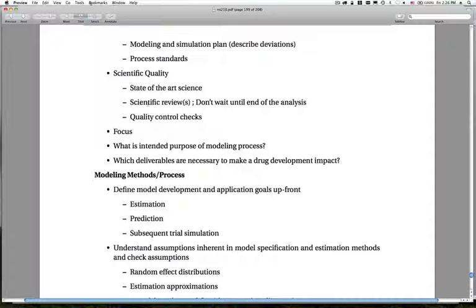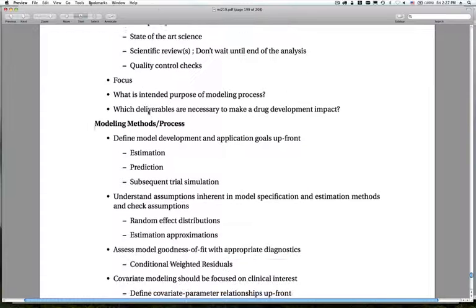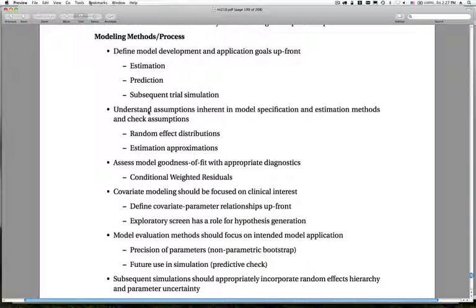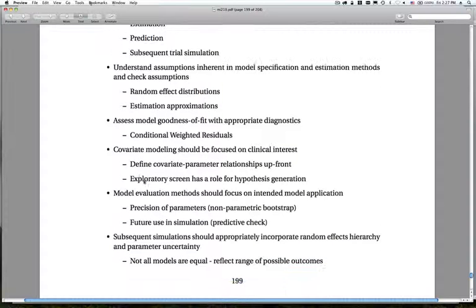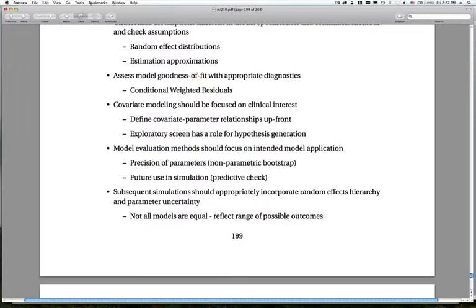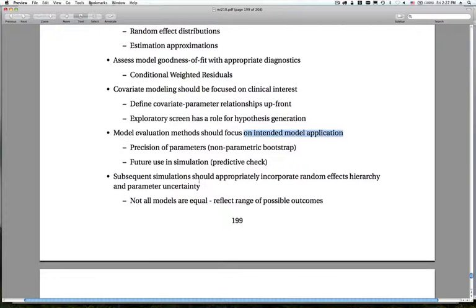And then think about the focus of the analysis. What's the primary purpose of the model? Which deliverables are necessary to make that development impact? And we talked about in the process, what are the things to consider? Model development application goals, understanding assumptions. And remember that we talked about this throughout the course, but particularly in the model checking lecture. Assess models going to fit with the appropriate diagnostics. Conditional weighted residuals, for example, should be used for conditional estimation. Covariate models should be focused on clinical interest. Model evaluation methods should be focused on the intended model application. Using bootstrapping, for example, or predictive checks to check the simulation performance. And then remember, including simulations should include the random effects hierarchy and the parameter uncertainty. So we can look at the sensitivity to what we don't know about the model and the model parameters.